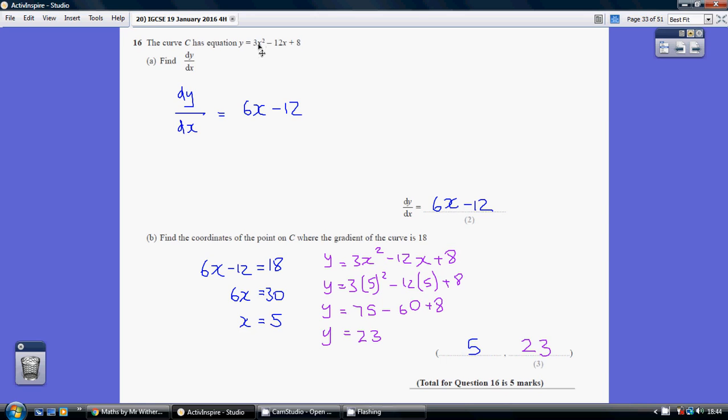So looking at this first term here, step 1, multiply by the existing power, 2 times 3 is 6, and step 2, reduce the power by 1, so not x squared, just x.